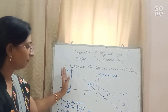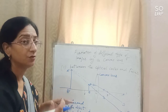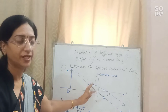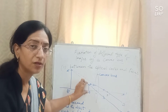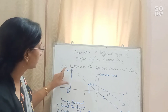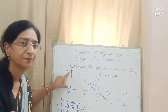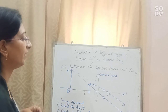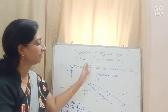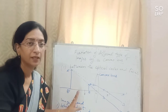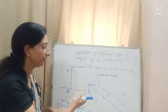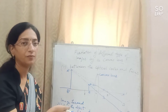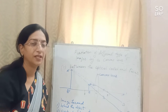The properties of the image when the object is placed between the optical center and the focus: the image is formed behind the object, it is virtual and erect, and it is larger than the object — the size of the image is bigger compared to the size of the object. Practically, this is how a convex lens acts as a magnifying glass.